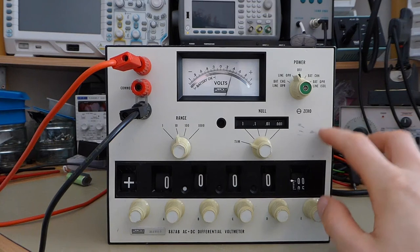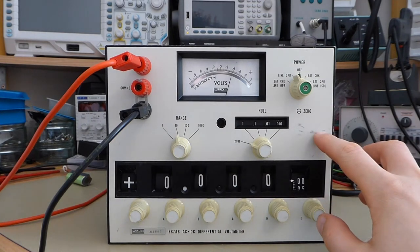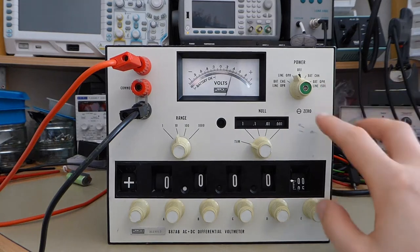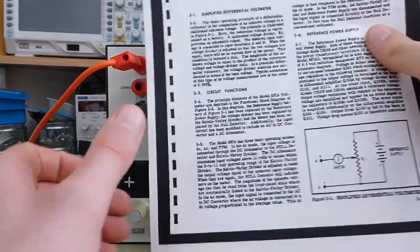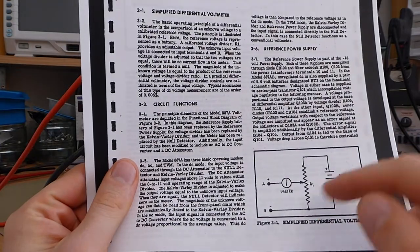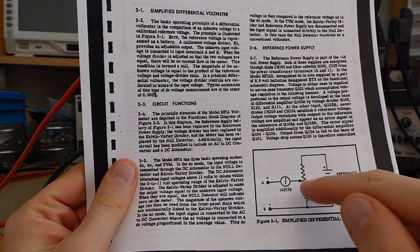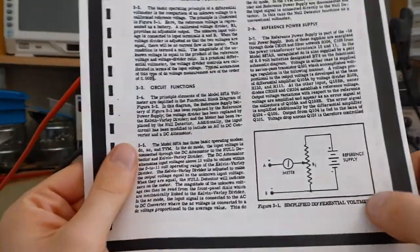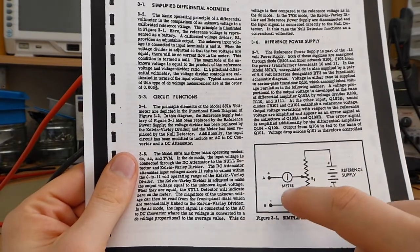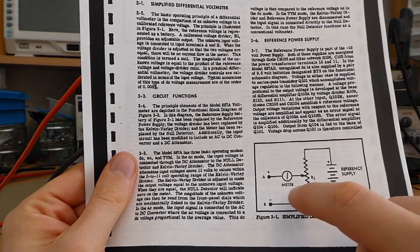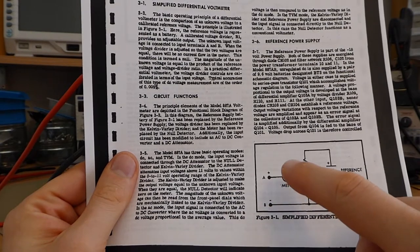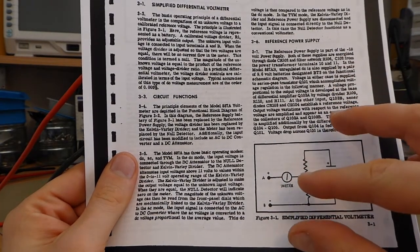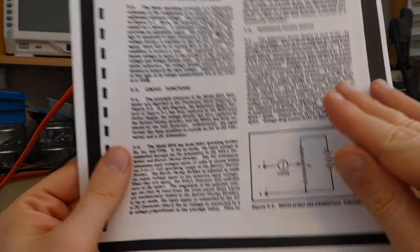The idea behind a differential voltmeter is that you have a reference voltage, and you measure the difference between the reference voltage and your input voltage. Very helpfully, Fluke have this simplified schematic in the manual for this. The idea is that you've got a built-in voltage reference, and you've got this adjustable divider, which is down here in this case. The idea is that you set this divider until the meter reads zero, which means that your input voltage is the same as what you set on your divider.